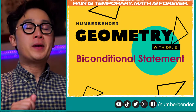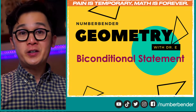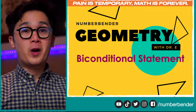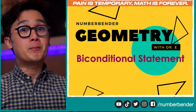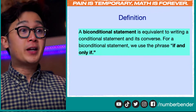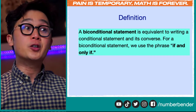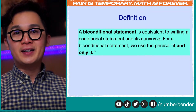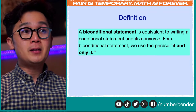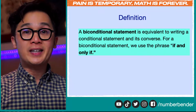To be able to understand biconditional statements, you should know how to formulate and write a conditional statement, wherein we have our hypothesis and our conclusion. By definition, a biconditional statement is equivalent to writing a conditional statement and its converse. For a biconditional statement, we use the phrase 'if and only if.'